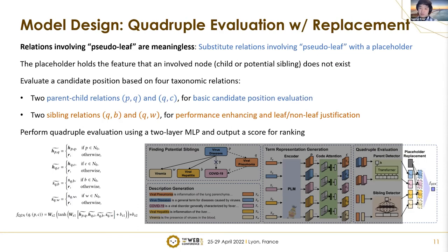Lastly, we conduct quadruple evaluation with replacement. Relations involving pseudo-leaves are meaningless, so we substitute them with a placeholder vector. The placeholder encodes the feature that an involved child or potential sibling does not exist. We evaluate a candidate position based on four taxonomic relations: two parent-child relations PQ and QC for basic candidate position evaluation, and two sibling relations QB and QW for both performance enhancement and leaf/non-leaf node justification. We perform quadruple evaluation using a two-layer MLP and output a score for ranking.